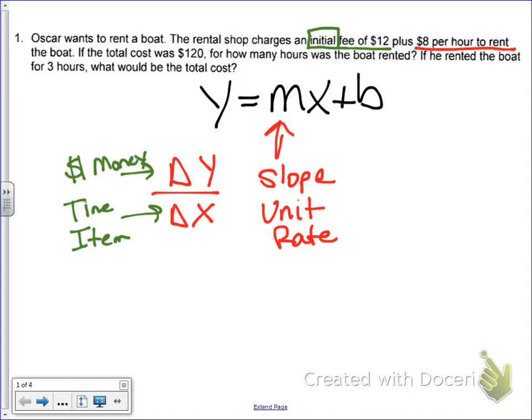Alright. In my y-intercept, which is b, we know that. So let's draw it as b, so y-intercept. Another name we gave it was the initial value. Initial value. And also with these word problems, it could be something that we have to start off by paying, an additional cost, the cost of just one item. So just be looking out for those keywords.